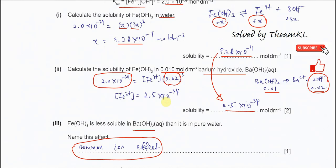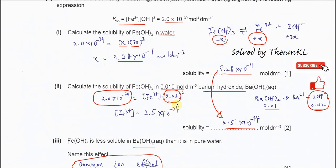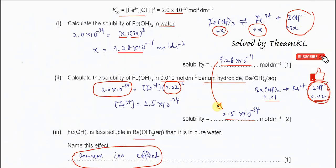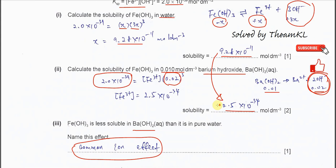The common ion is the hydroxide — the hydroxide used in Part 2. Because the hydroxide from barium hydroxide lowers the solubility of iron 3 hydroxide.